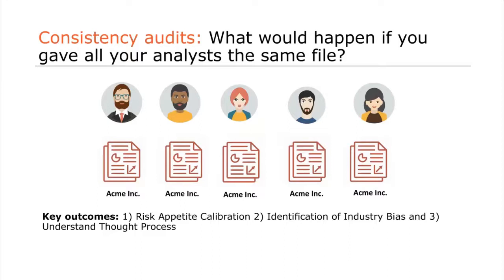See if they come out with the same rating. One of the key outcomes is that you understand each one of your analysts has different risk appetites. They have different biases towards certain industries, and that colors how they actually review loans. You think all your analysts think the same — they don't.